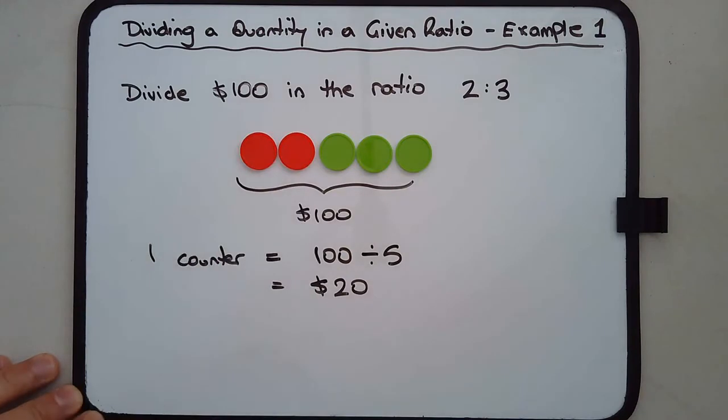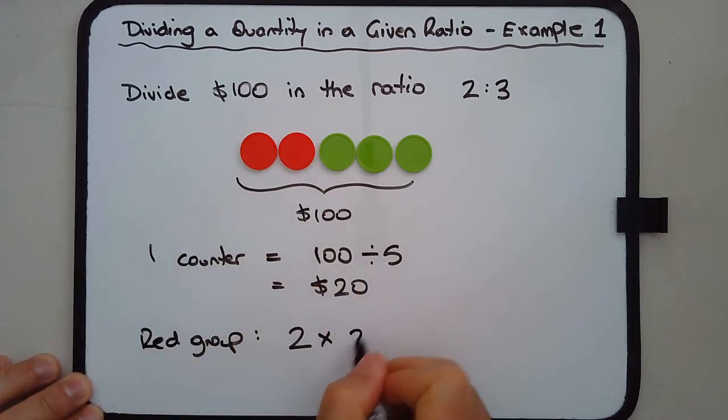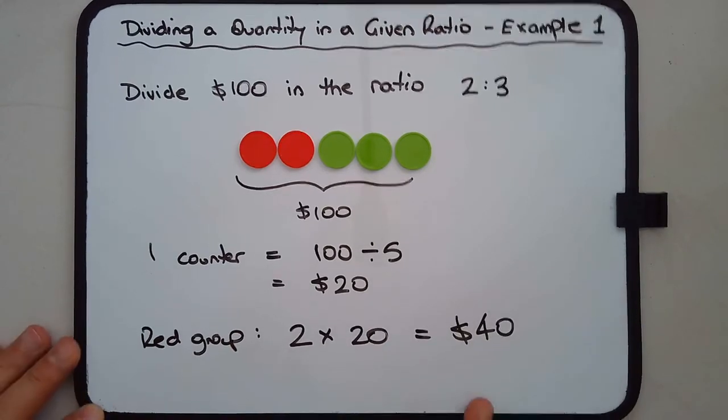So the reds, there's two of them. The value of the red group - there are two counters in the red group, each counter is worth $20, and that gives us $40.